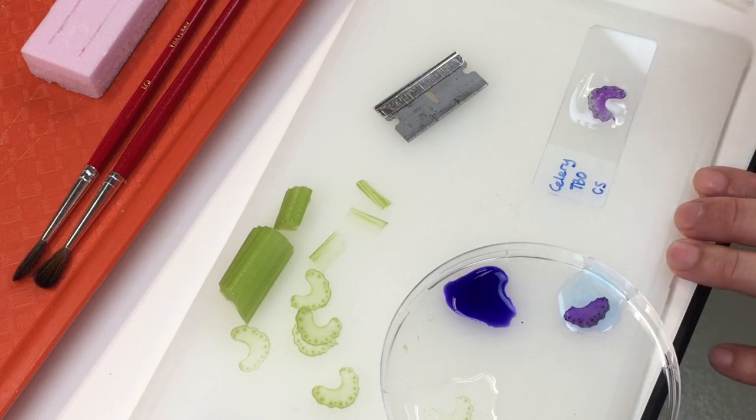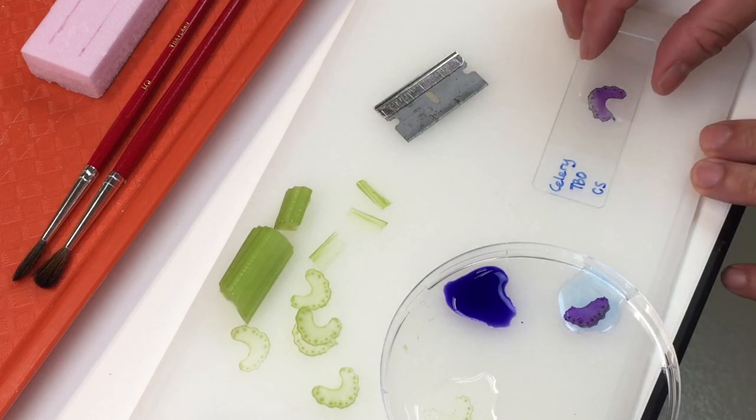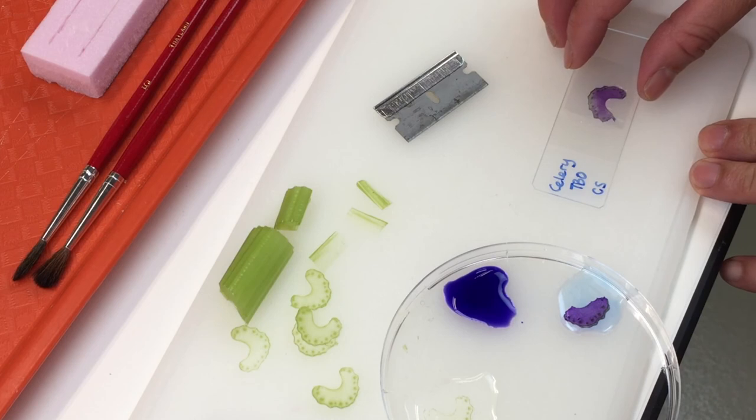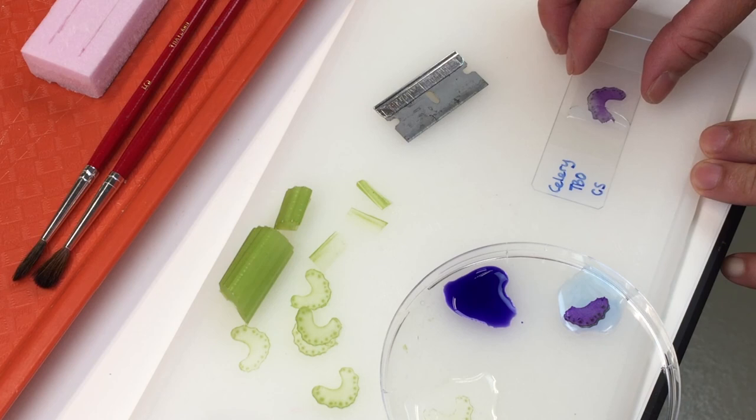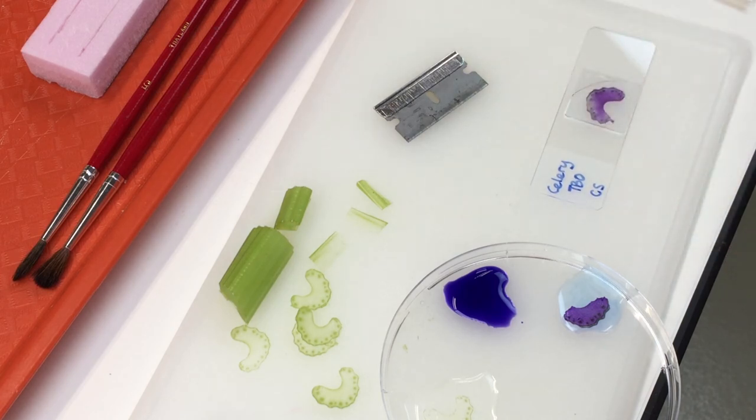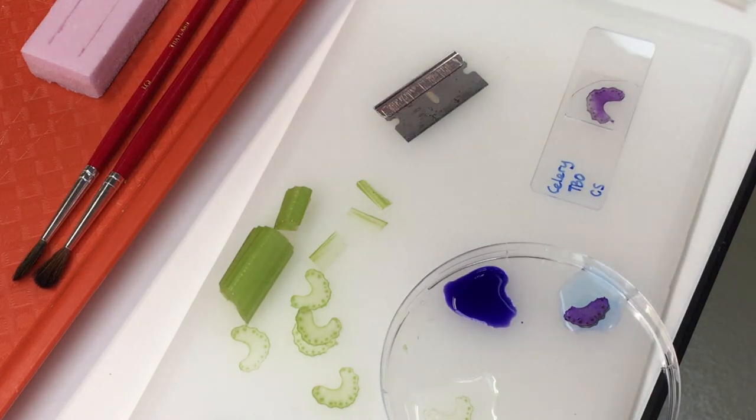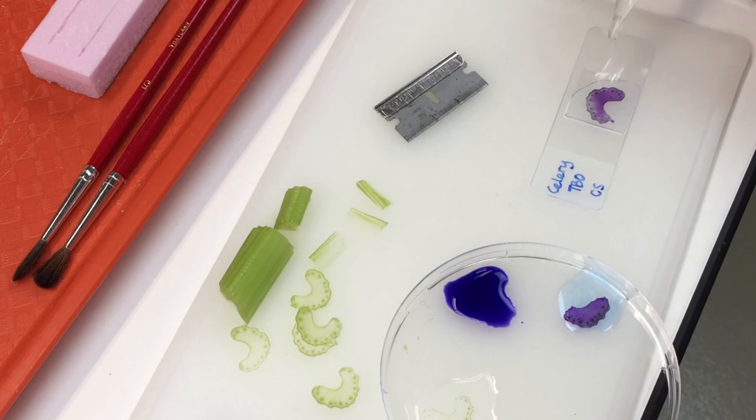Cover your specimen with the cover slip. When covering, use an edge of the cover slip touching the slide at an angle. Gently let it slide so that it completely covers your specimen. Try to prevent bubbles from forming and obstructing the view of your specimen. Make sure that your specimen is fully submerged in water. It is now ready to be viewed under the compound microscope.